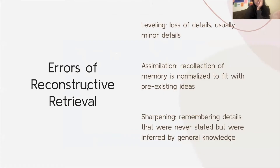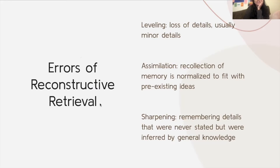I'm going to go over errors of reconstructive retrieval. There is leveling, which represents the loss of minor details. There is also assimilation, which represents a recollection of memory that is normalized to fit with pre-existing ideas. And there is sharpening, which involves remembering details that were never stated but were inferred by general knowledge.